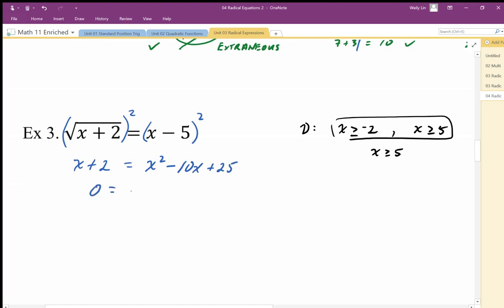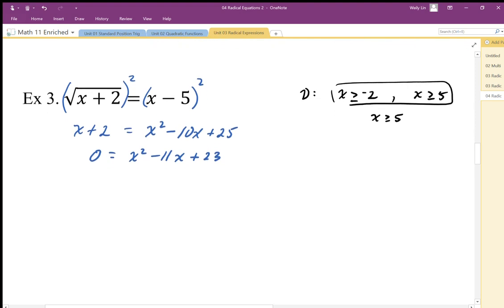So quadratic, make that equal to 0, subtract x from both sides, subtract 2 from both sides. So 23 is a prime number, so it looks like there's not much choice here to factor, so it looks like it's not going to solve by factoring, so I'm going to solve this by quadratic formula. So I end up with 11 plus minus 11 squared minus 4 times a times c, and that's all over 2 times a.